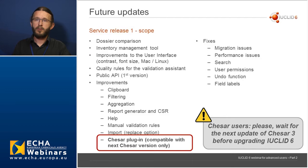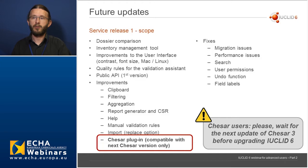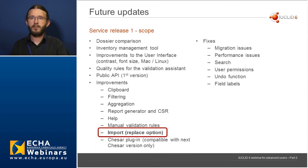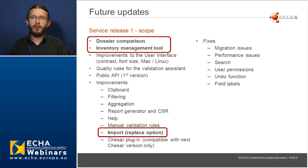An important point for CSR users: this new service release of IUCLID will include an updated CSR plugin that allows communication between CSR3 and IUCLID 6. In order to anticipate changes that will be made to the next version of CSR3 in October, we have updated this plugin. This means that this plugin will make IUCLID 6 not compatible with the current version of CSR3. So our advice for CSR users is to wait for the next update of CSR3 before upgrading IUCLID 6. My colleague Marc will then guide you through the new features.